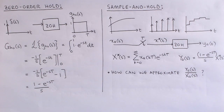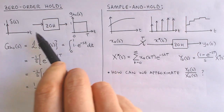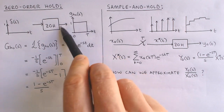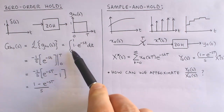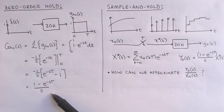Let's now move on to the zero-order hold circuit and try to find a continuous time model for it. We do this by calculating its impulse response, which we then Laplace transform to find its transfer function. The zero-order hold circuit holds the value of the discrete signal on its input constant for one sampling period. If the discrete signal is modelled as an impulse train, the output holds the weight of the input impulse constant for one sampling period. This is therefore the impulse response of the zero-order hold circuit. To find its transfer function, we apply the Laplace transform to the impulse response, and after using the Laplace transform definition and calculating the integral, we get this transfer function for the zero-order hold circuit.